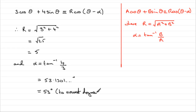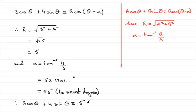So, just to wrap this problem up, we can go back and say that therefore 3 cos theta plus 4 sin theta is identical to r — which is 5 — times cos of theta minus alpha, which is minus 53 degrees. And that brings us to the end of this video.